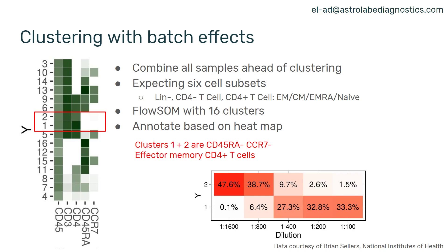This is not a FlowSOM issue — you would see this with FlowSOM, with SPADE, with Phenograph, with TSNE, with UMAP. Any method you use for analyzing this data is susceptible to batch effects.